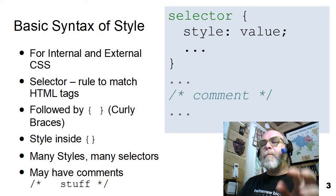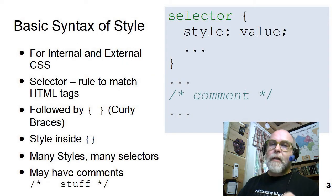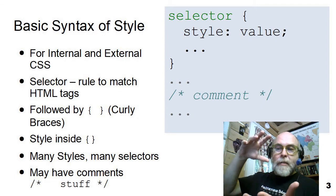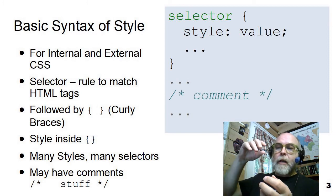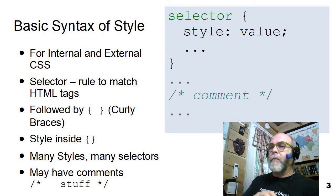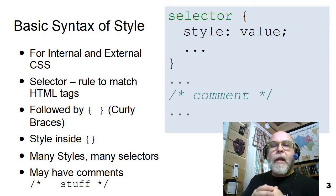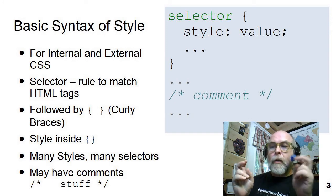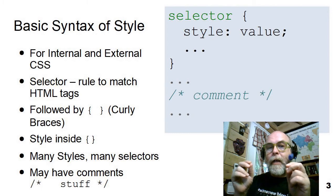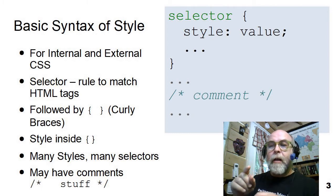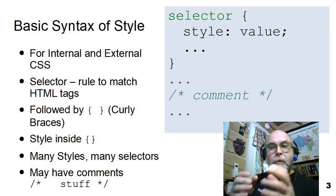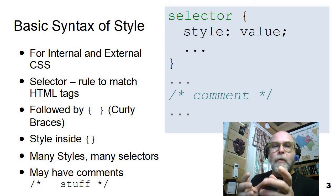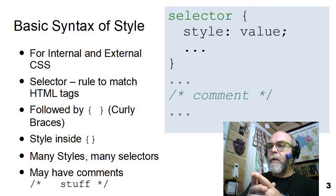Let's talk about the basic syntax of style. Style is a text format just like an HTML document or lines of an HTML document. It includes a thing called a selector, and the selector is what tells CSS which elements of HTML to apply the style to. Selectors can be very simple to very complex. We'll show you a very simple selector in this presentation.